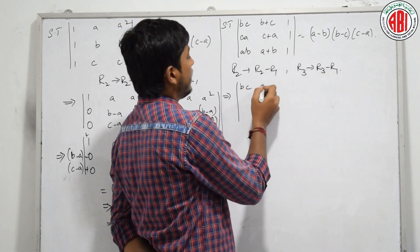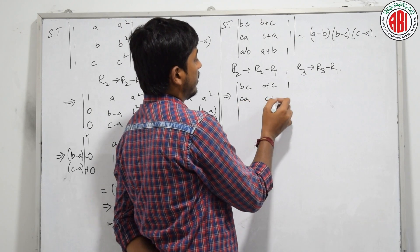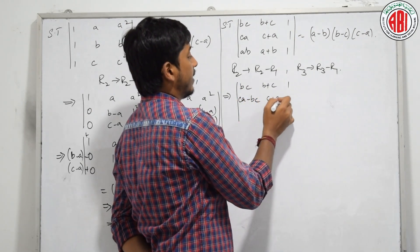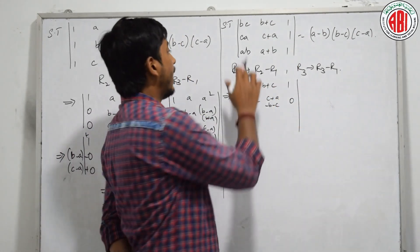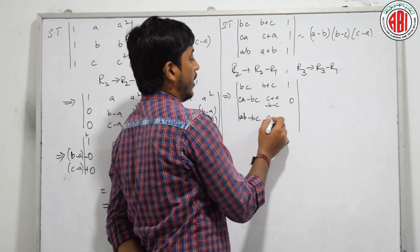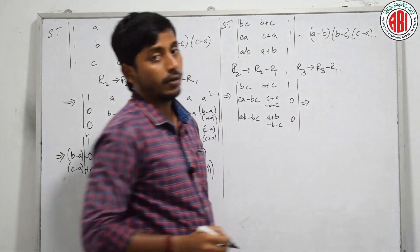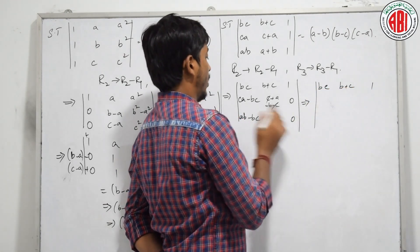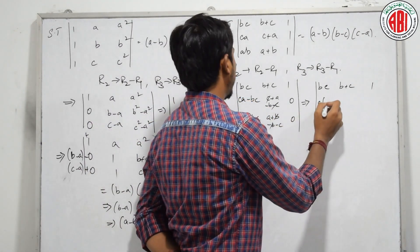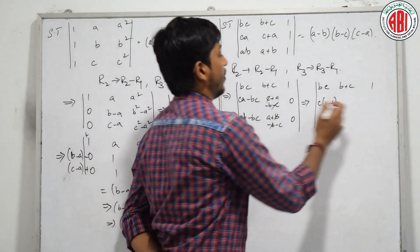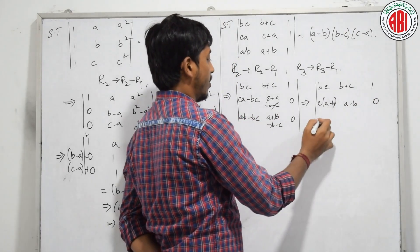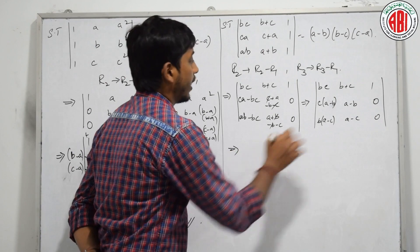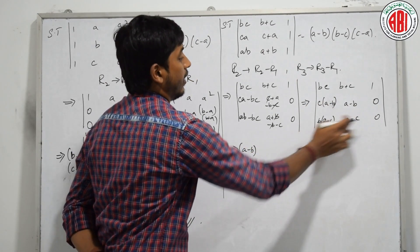Next problem: the matrix has elements B, C, B plus C; 1, C, A, C plus A; 1, A, B, A plus B; 1. Applying R2→R2−R1 and R3→R3−R1, we get the first row as B, C, B plus C, 1. Then: A minus B remains; C plus A minus B minus C gives A; 0. And for row 3: A minus B remains; A plus B minus B minus C remains; 0. Taking C as common gives A minus B; taking B as common gives A minus C. Then taking A minus B common and A minus C common leaves a simplified determinant.